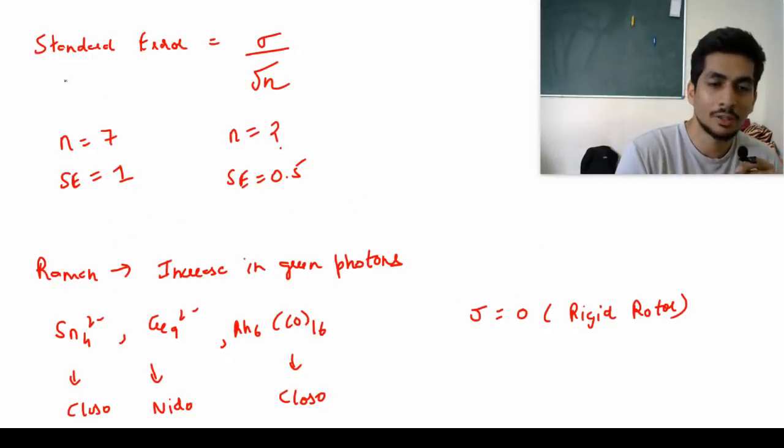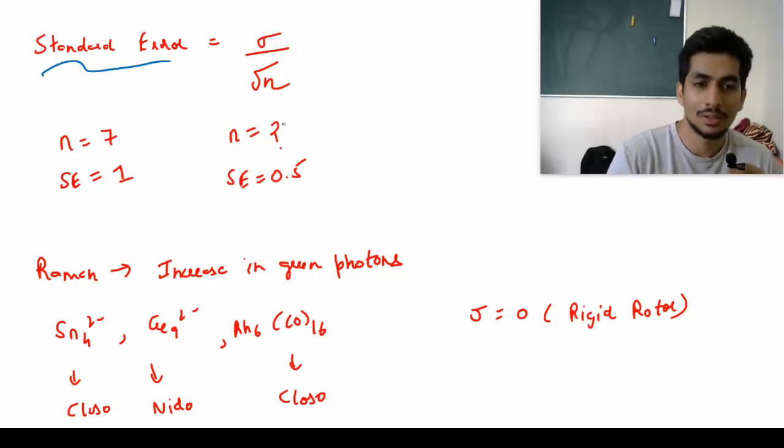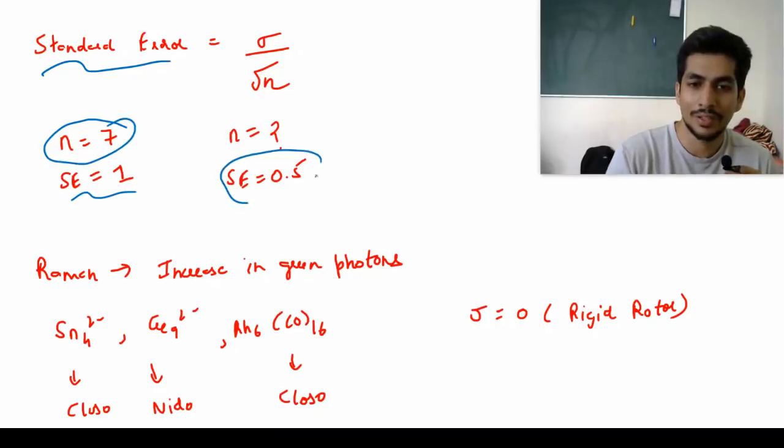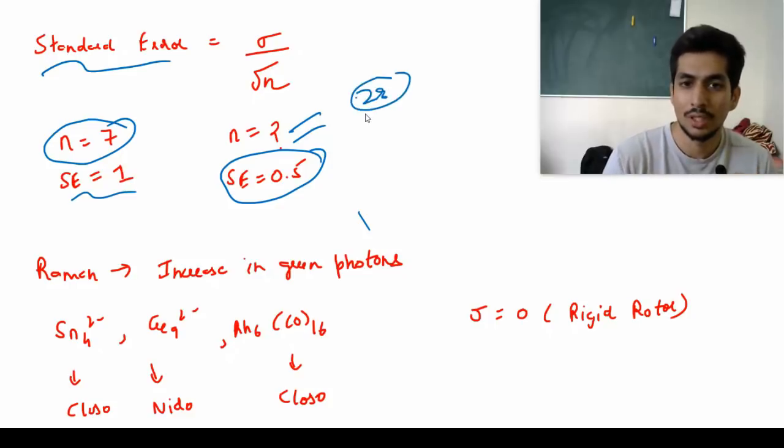Then standard error question was there. In standard error it was given that standard error is plus minus 1 for seven iterations, so what will be the standard error for 0.5 iterations - I mean the standard error was given as 0.5, we had to find number of iterations n. I think the answer for this should be 28. From this formula you can calculate, answer was coming out to be 28.